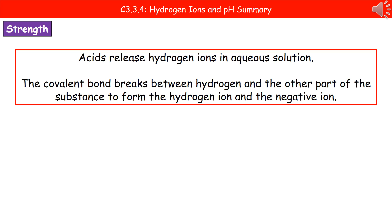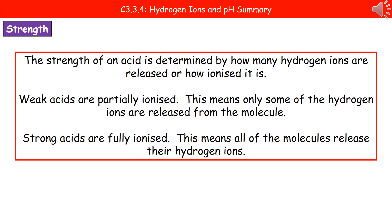The second idea we're going to look at is the idea of strength. We do know that when acids are in aqueous solution, they release hydrogen ions. The reason they can do that is that the covalent bond that holds the hydrogen to the other part of the substance is going to break. When that covalent bond breaks, the hydrogen ion is released and the negative ion is released. The strength of an acid is determined by how many hydrogen ions are released — this can also be referred to as how ionized it is.